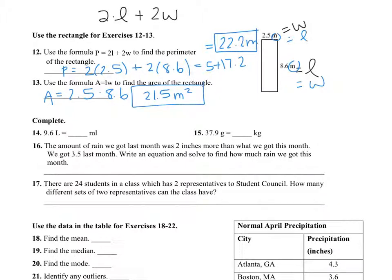So perimeter has units that are just meters, centimeters, inches, feet. Area has units, meters squared, centimeters squared, inches squared, feet squared. So always make sure you include your units.